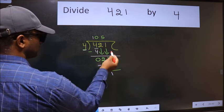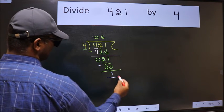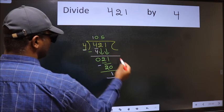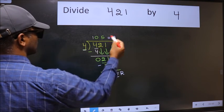No more numbers to bring it down. So we stop here. This is our remainder and this is our quotient.